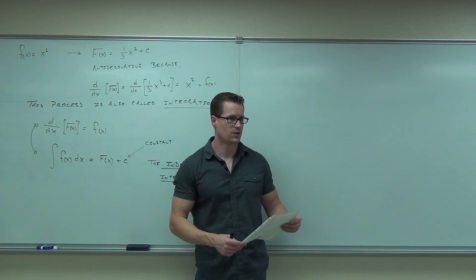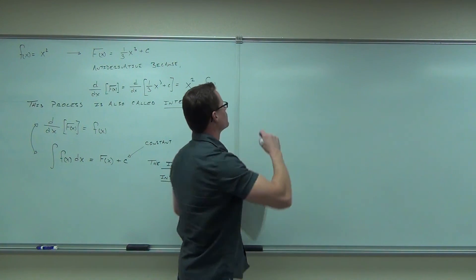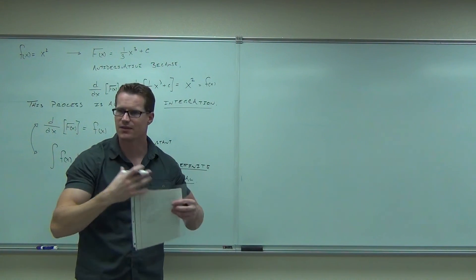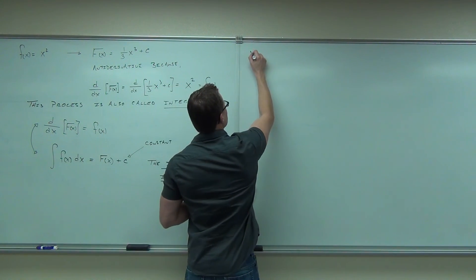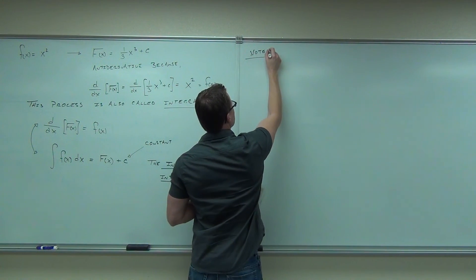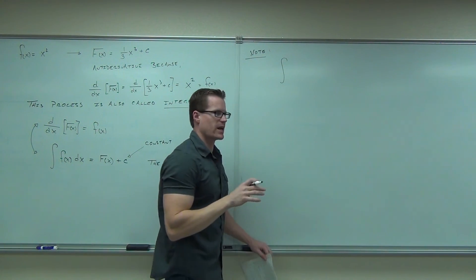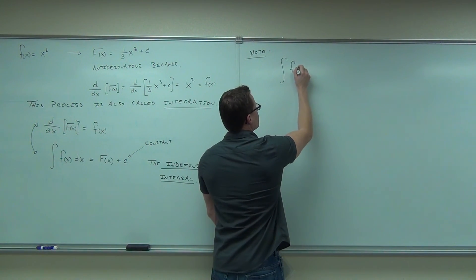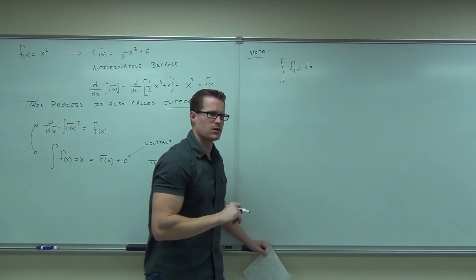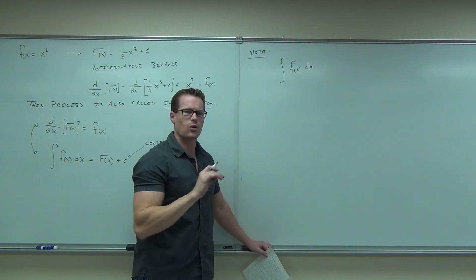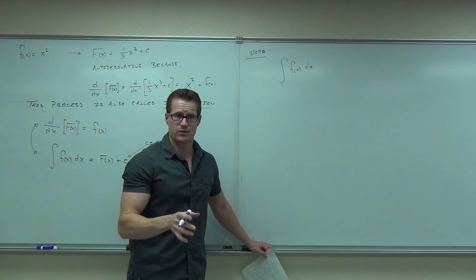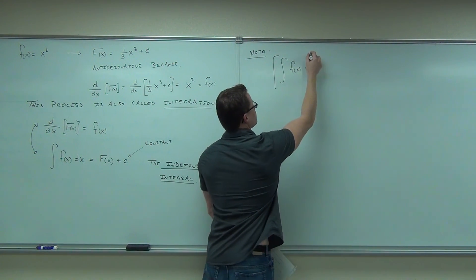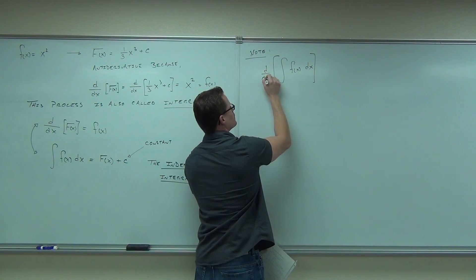What this means is: find the anti-derivative, or undo this as if it were a derivative of something. Give me some function that I can take a derivative of and it will give me back what you started with. That's the whole idea. What would you suppose would happen if I took a derivative of an anti-derivative?